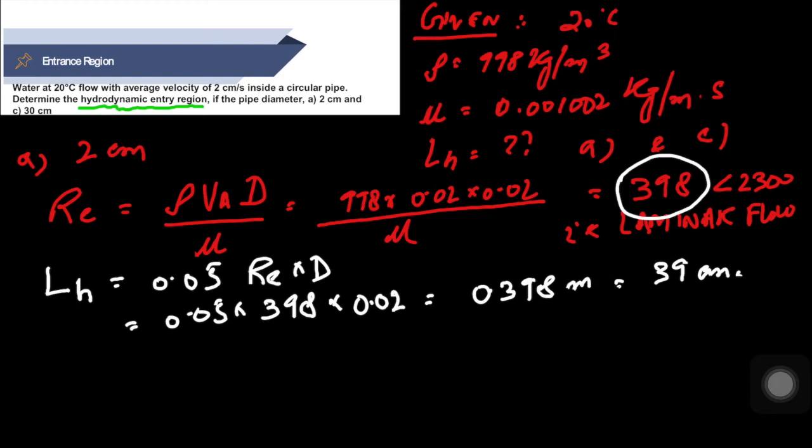Now let's move to part C where the diameter is 30 centimeter. Here we are going to put only 0.03, the rest remain same. So the Reynolds number Re comes out to be 5970.